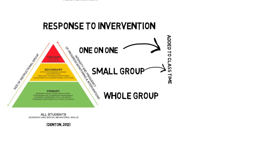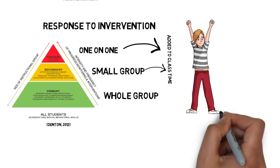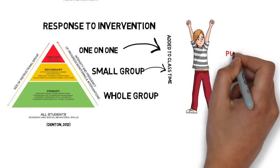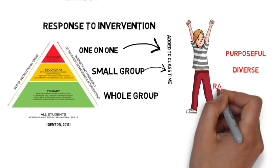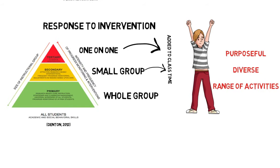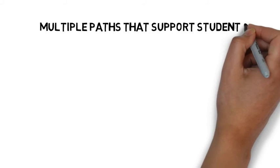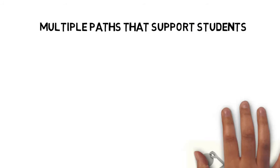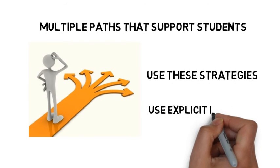The RTI model greatly benefits students with reading difficulties, as the instruction is purposeful with key objectives defined. It caters to diverse needs and ensures the students are getting a range of easy and challenging activities. There is no one way to help students with reading difficulties to become more confident readers, but by incorporating some of these strategies and using explicit instruction, you can help students to understand and learn about the complexities of reading. Thank you for watching.